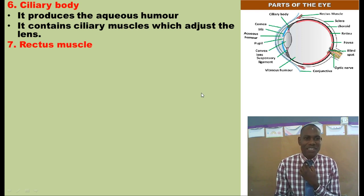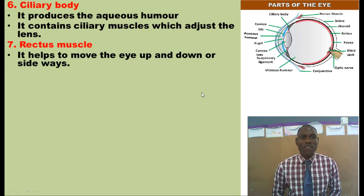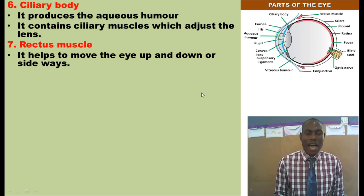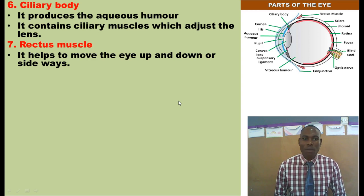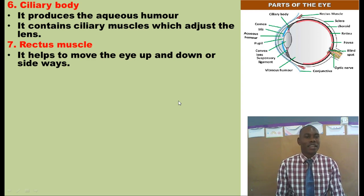Let us talk about the rectus muscle. The rectus muscle helps to move the eye up and down or sideways. If you want to move your eyes — some of you are able to roll your eyes — you can roll your eyes up and down or sideways using the rectus muscle.